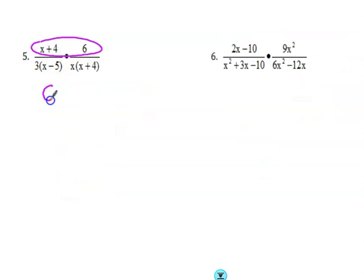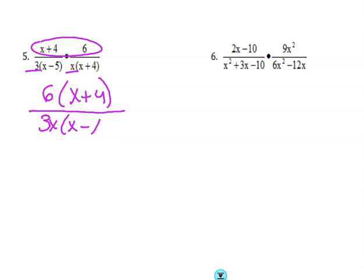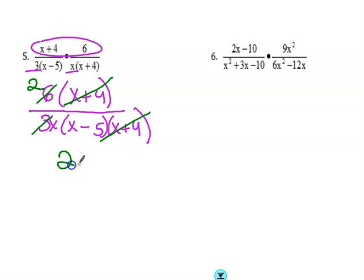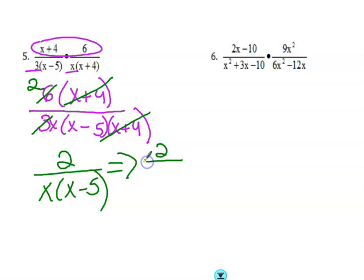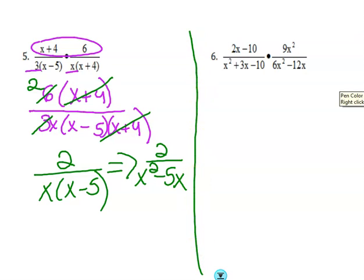Continuing, we put the numerator together: 6 times x plus 4. On the bottom I have 3x and then x minus 5 times x minus 5. Now let's see what factors we can take away. x plus 4 cancels, and 6 and 3 have a 3 in common, so 2 is left on the numerator. On the bottom, we have x times x minus 5 as the final answer. If this isn't one of your multiple choice options, it could also be 2 times x² minus 5x. Ask your teacher which form they prefer — I would be fine with it staying in factored form.